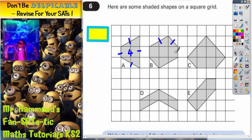Shape B has got one, two, three, four, five, six sides.